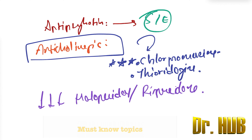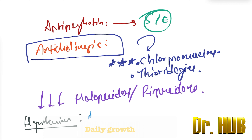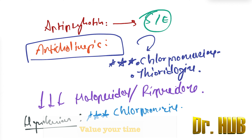Next we look at the side effect of hypotension. The highest potential for hypotension is chlorpromazine as well as clozapine.